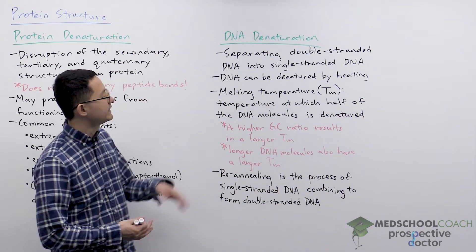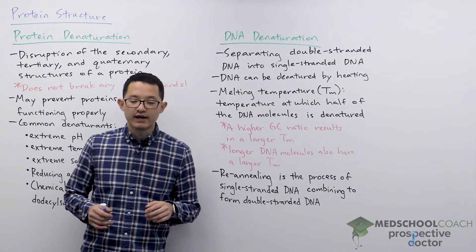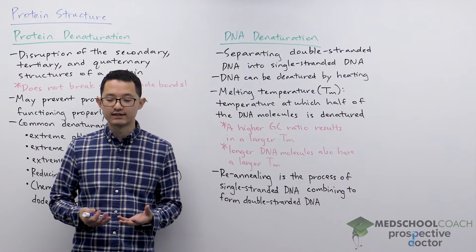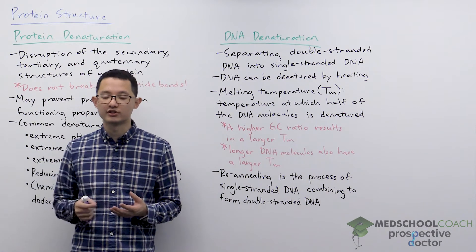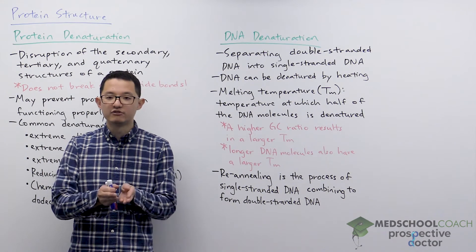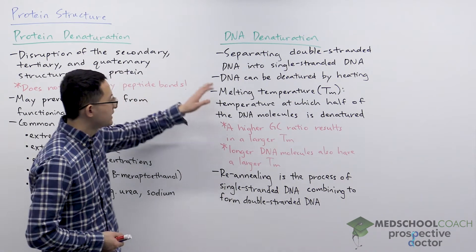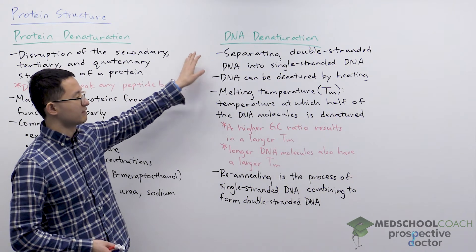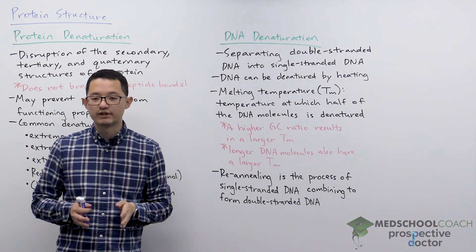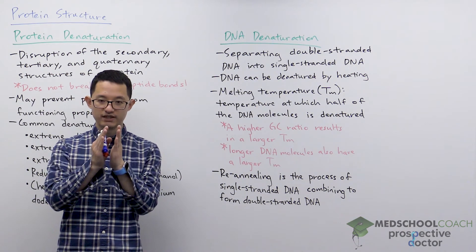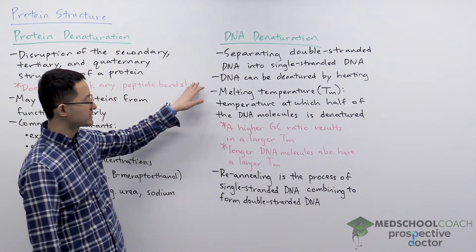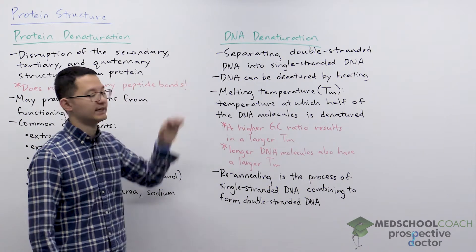Now let's look at DNA denaturation. DNA has a structure called the double helix — 'helix' meaning a coiled structure, and 'double' meaning two strands of DNA bound together. DNA denaturation refers to the process of separating double-stranded DNA into single-stranded DNA molecules, essentially taking the two DNA molecules and separating them from each other.